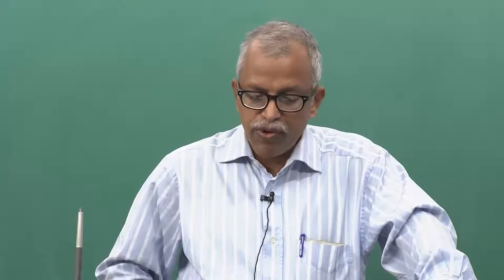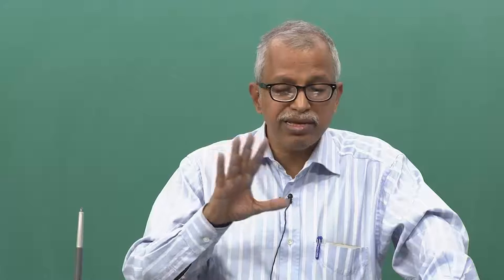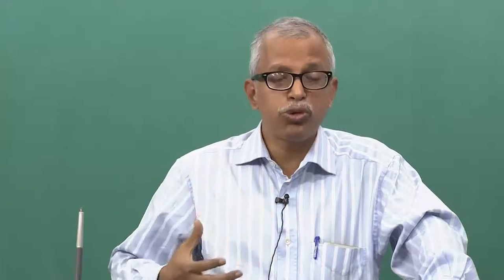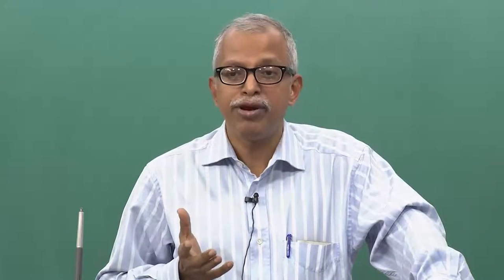This fauna diversity data I have taken from Alfred Jervi, 'An Overview of Faunal Diversity in India,' from the Zoological Survey of India, 1998. This is older data but the numbers I am quoting are correct. One reason we should go for cultivation is that we have a teeming population of around 130 crore people, and we cannot rely on outside countries for food — that would put us in trouble.